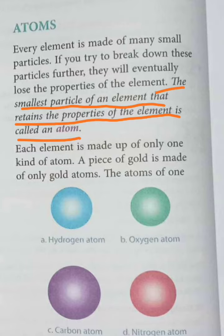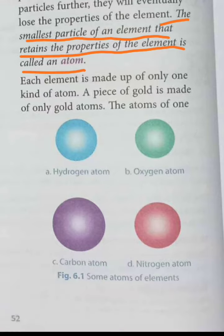For example, if you take a gold ring and break it down, removing any impurities, you will get only one kind of atom — that is the atom of gold. So different elements have different kinds of atoms.